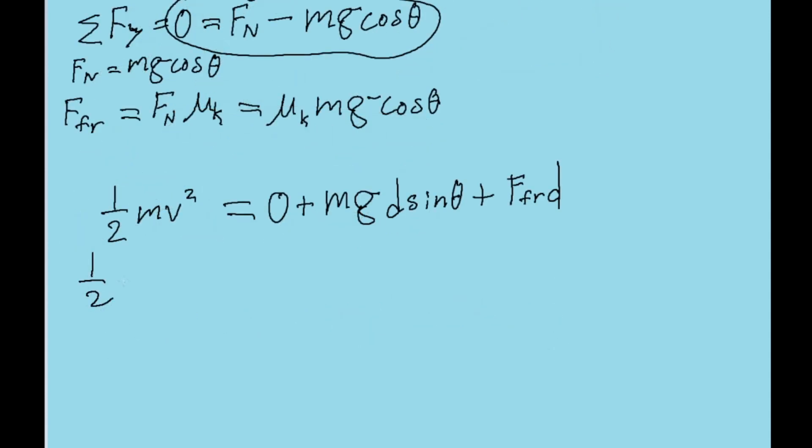Let's write this formula again, but in a more complete way. So the kinetic energy is equal to the potential energy, plus the coefficient of friction times mg cosine theta times d. Now let's try simplifying this. We have mass in every single one of these terms, so they can all cancel out.